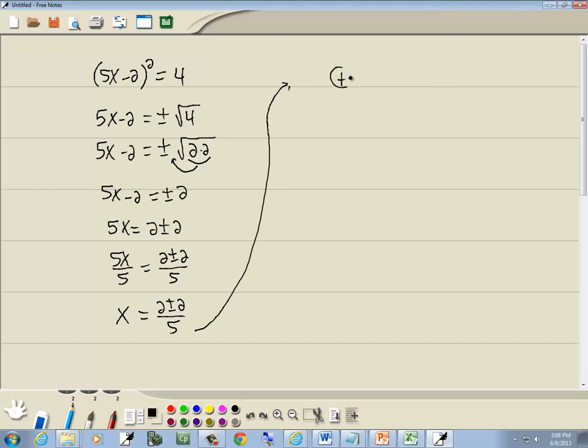Now we're going to split this up into a positive version and a negative version. Because what that plus or minus means is we have 2 plus 2 over 5, and we have 2 minus 2 over 5.